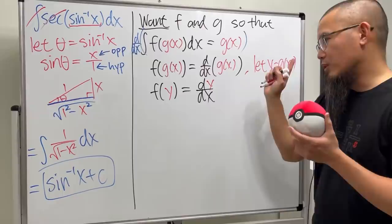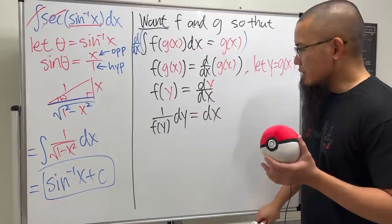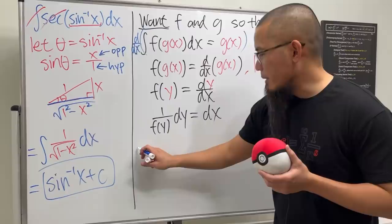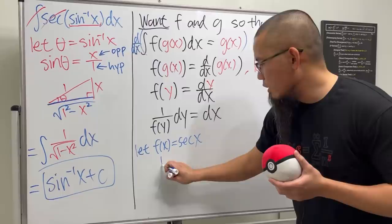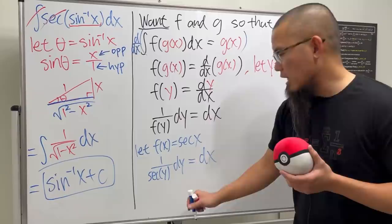And how in the world can we solve this? Now this is the time that you are going to pick some function first and then just kind of work this out. If you want to make that happen, what you can do is you can just start by saying let f of x be secant of x. So this part becomes 1 over secant of y dy and that's equal to dx.